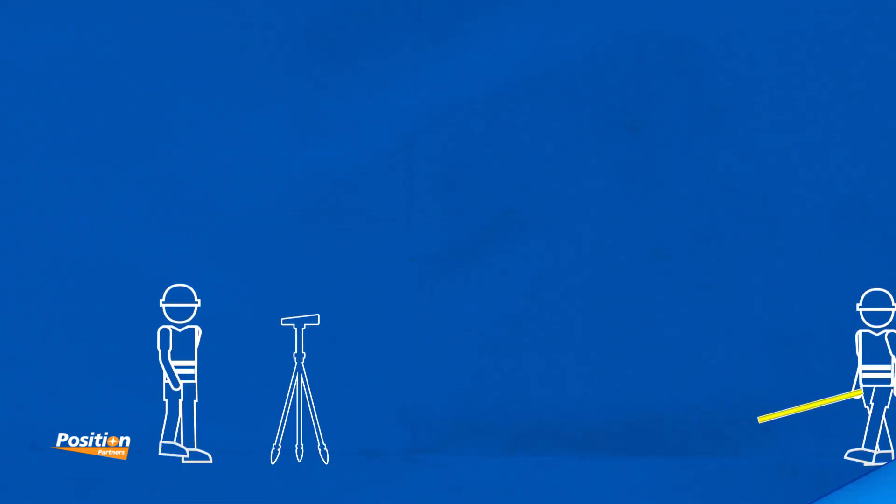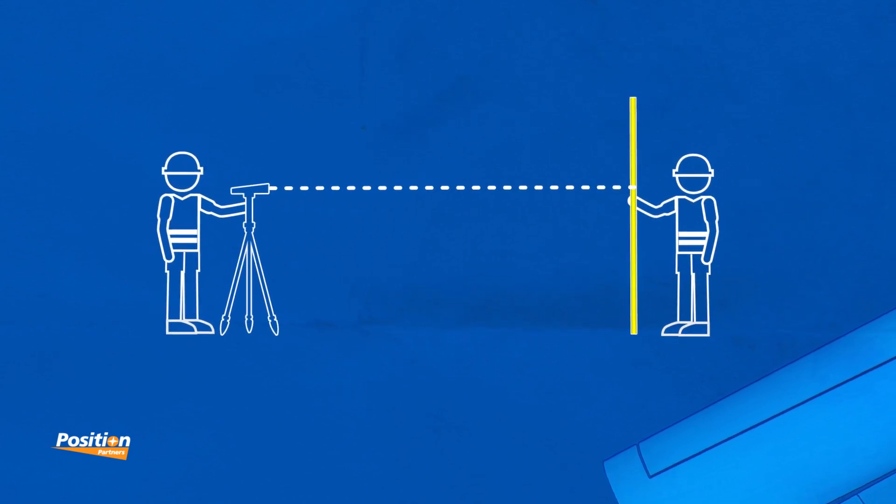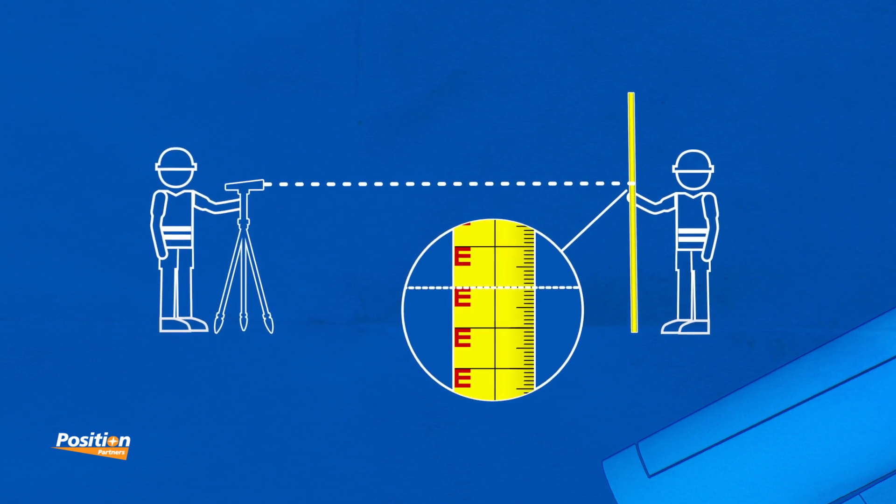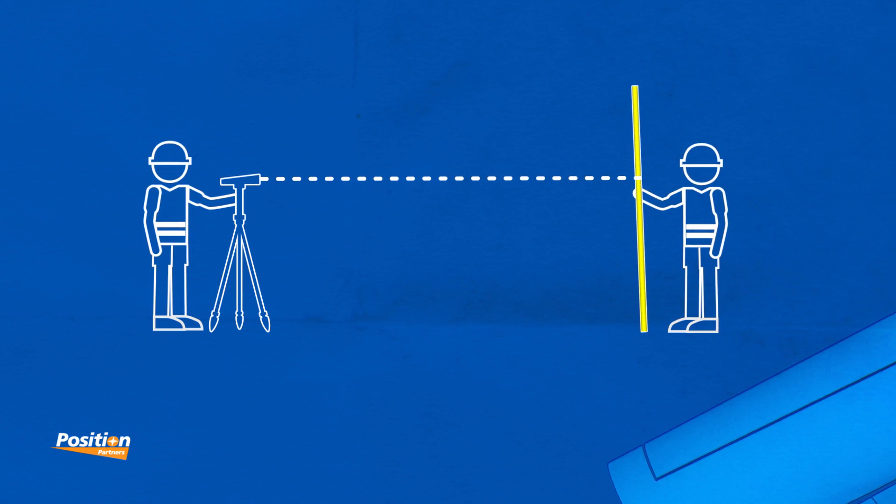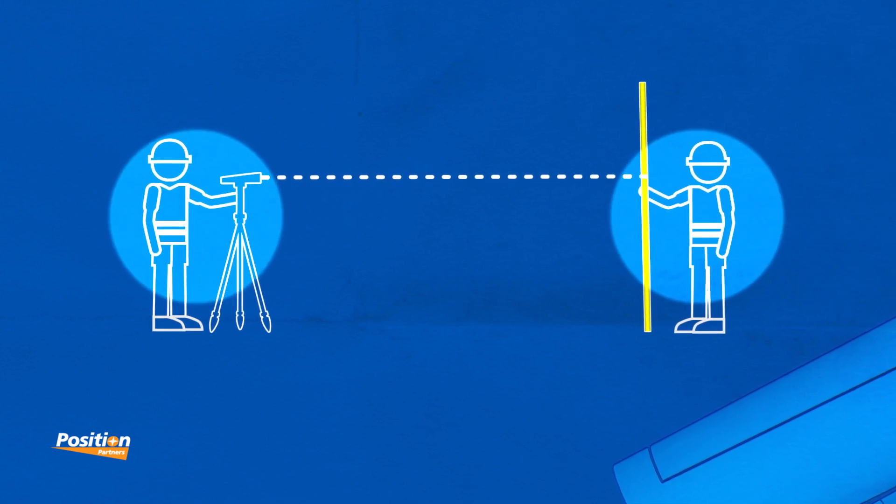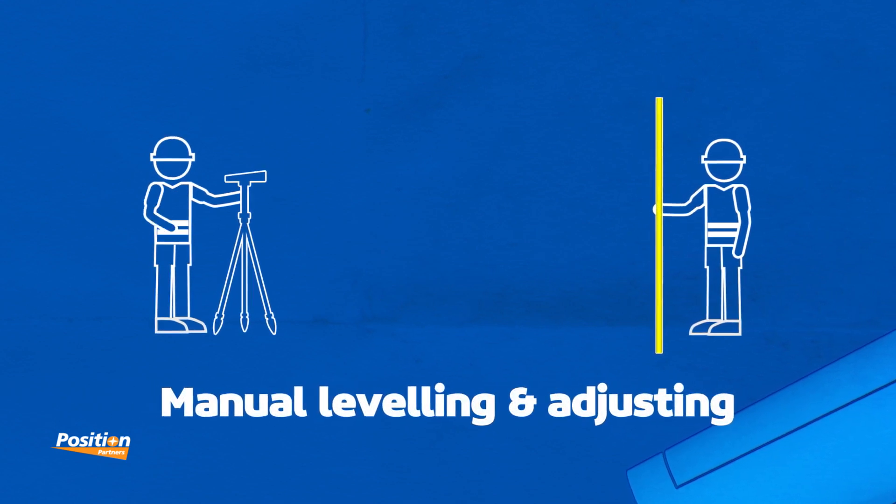The auto level provides accurate horizontal measurements using a telescope to look through the lens to calculate the level versus offset using the crosshairs and stadia marks on a measuring staff. It requires two people to operate it manually by eye, numerous calculations, and can be less accurate if not set up correctly.